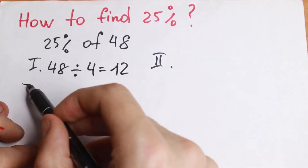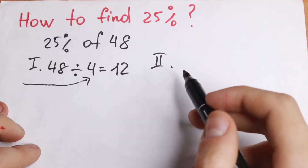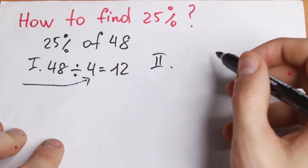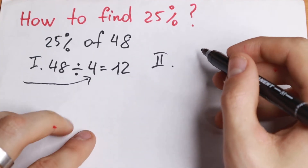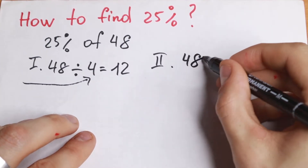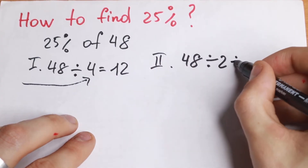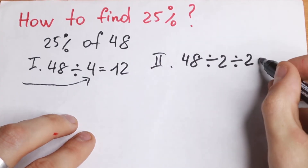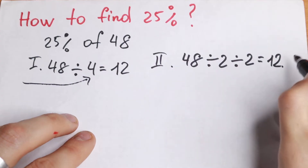You need to divide by 4 to get 25%. Or if it's hard for you to divide by 4, you can divide by 2 two times — dividing by 2 first and dividing by 2 a second time. We will still have 12.